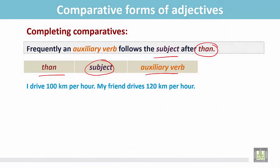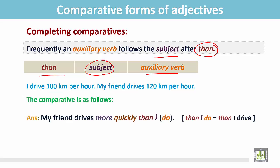I drive 100 km per hour. My friend drives 120 km per hour. In these two sentences, the verb is drive and the subjects are I and my friend. And how to compare these two sentences? My friend drives more quickly than I do.